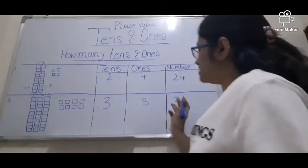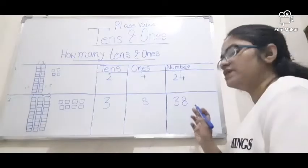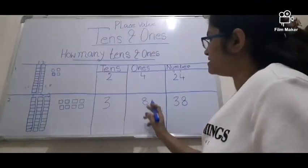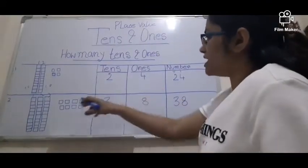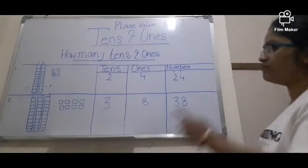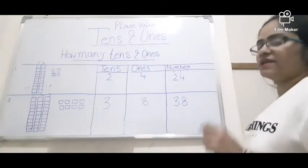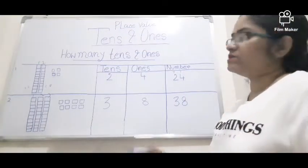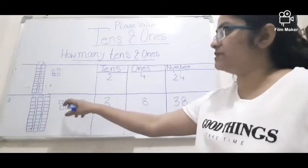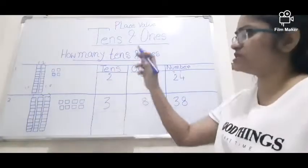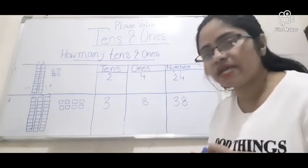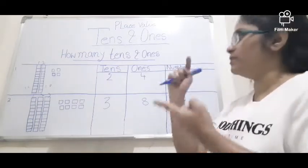So whether it's 38 or 34, we can say 3 tens and 8 ones. In the case of the 1s place we draw single blocks separately, but in the 10s place position we have to draw the 10 blocks in one group.